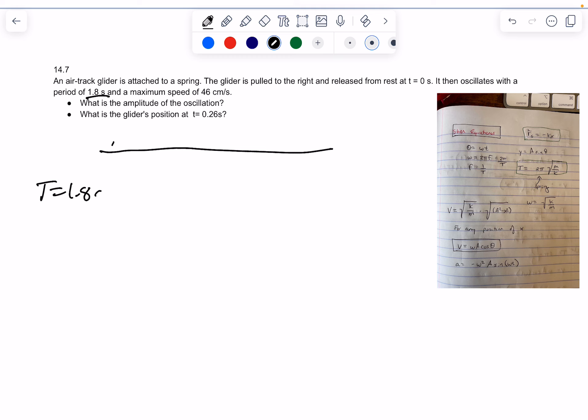So, T is 1.8 seconds. And a maximum speed, so V max, equals 46 centimeters per second.